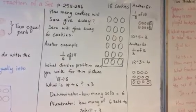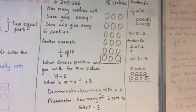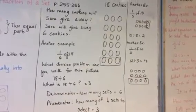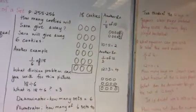So the denominator is how many sets? 6. And numerator, how many of the 6 sets to select? 3. Inside each set, there is 3 circles.